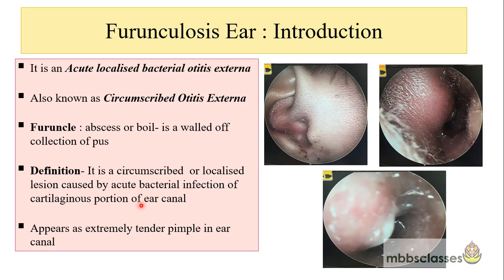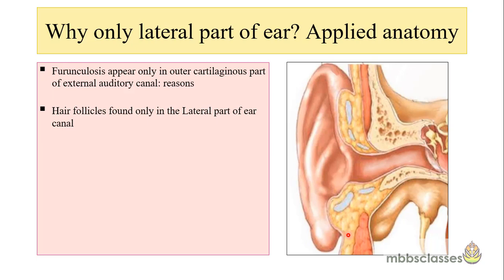It appears as an extremely tender pimple in the outer part of the ear canal. Here you can see otoscopic pictures showing the different stages of furunculosis of the ear. There is a furuncle in the posterior upper part of the external auditory canal, which is also causing inflammation in the adjacent conchal area. As the furuncle progresses, it changes to the pus-pointing stage.